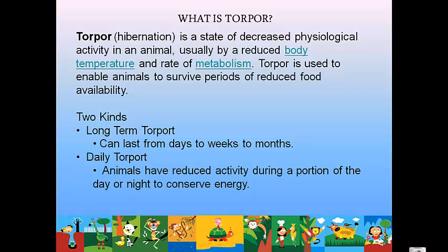Torpor includes slowing down the heartbeat, breathing rate, body temperature, metabolism, and urination or defecation. Any time an animal slows down its body functions — without completely shutting down, which would be death — we call that torpor.